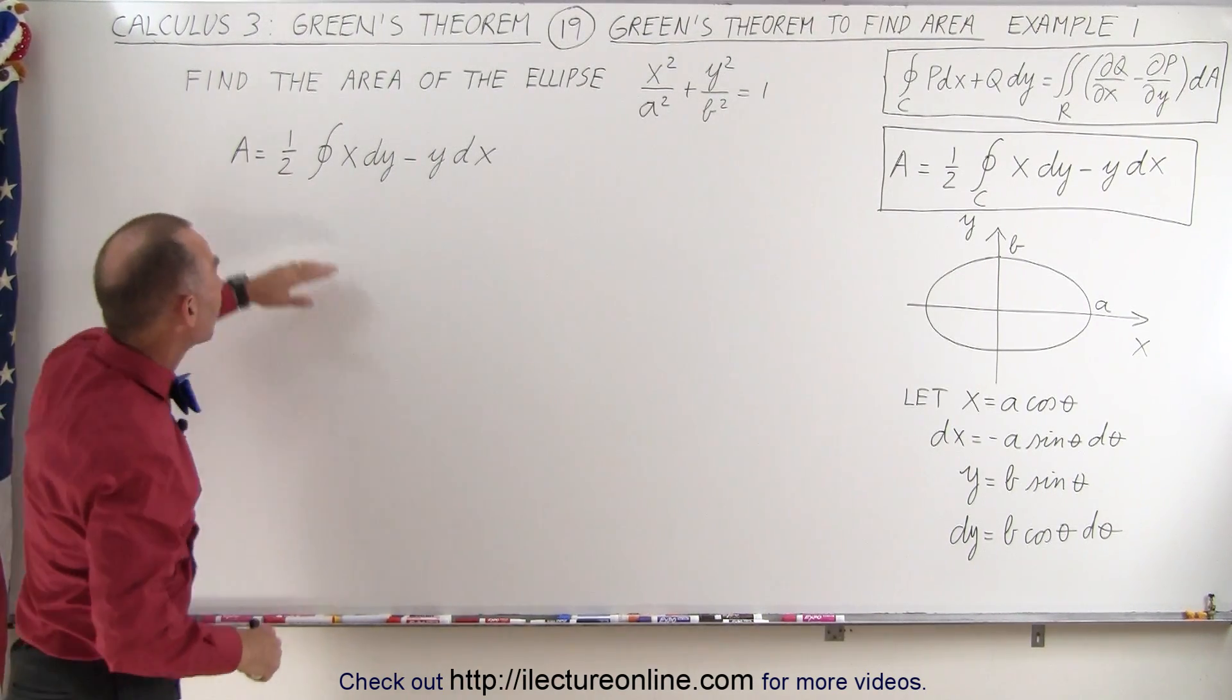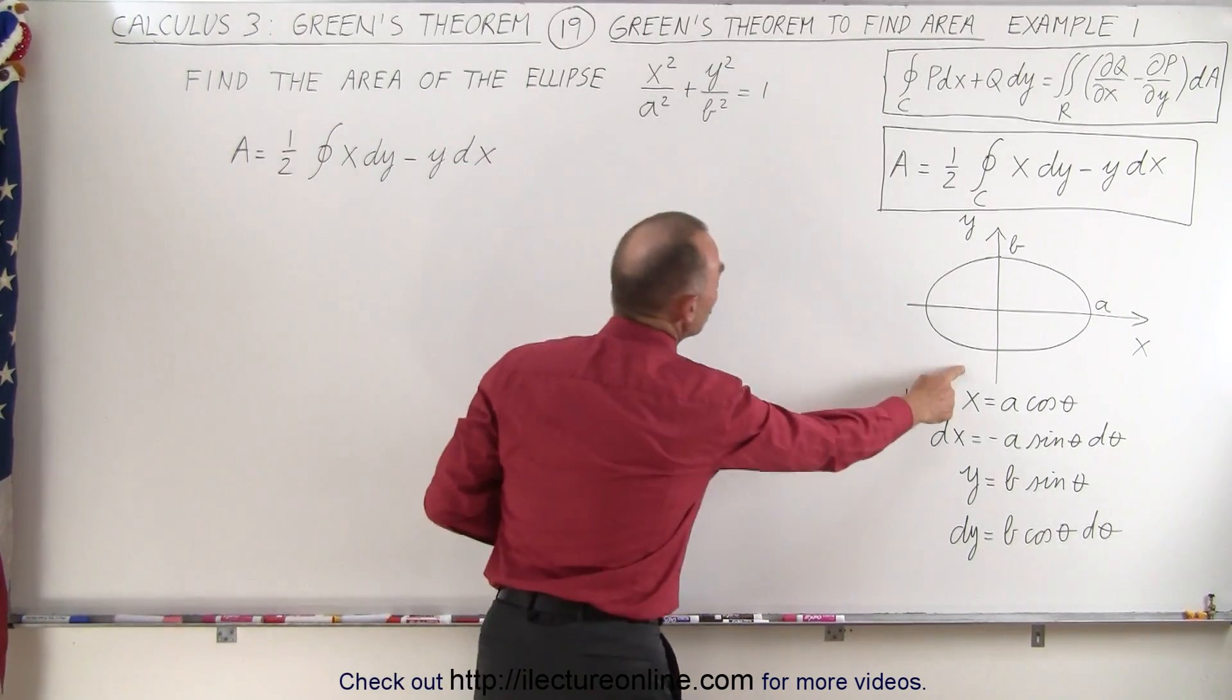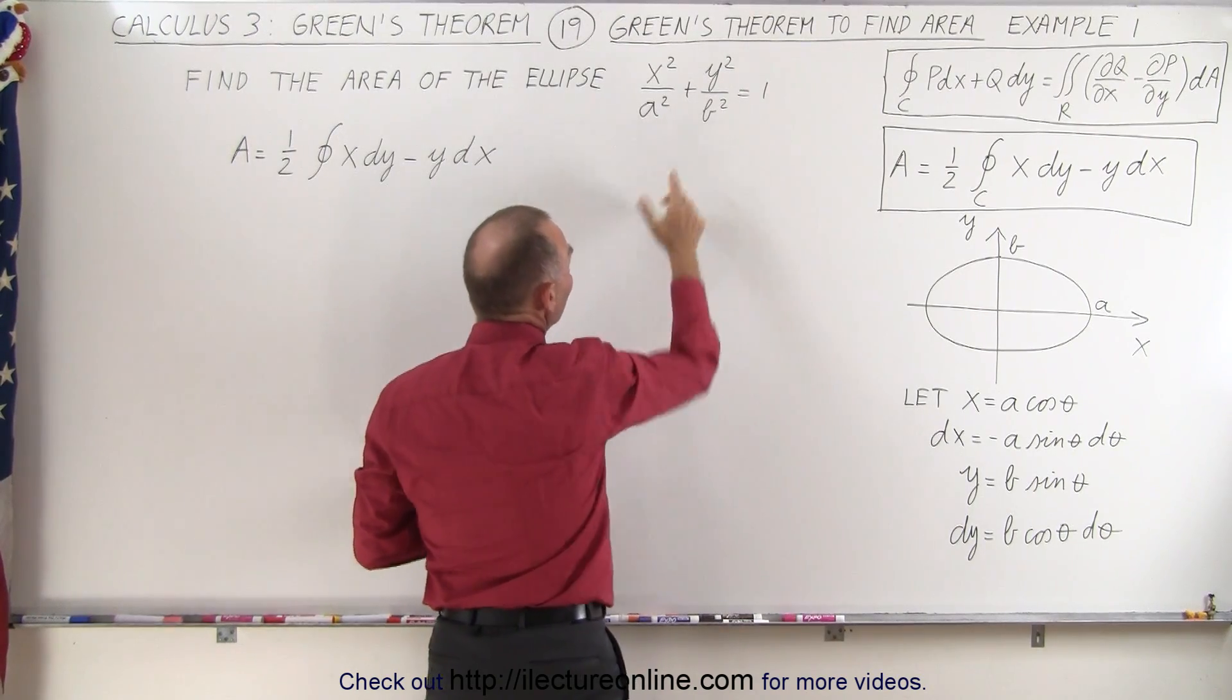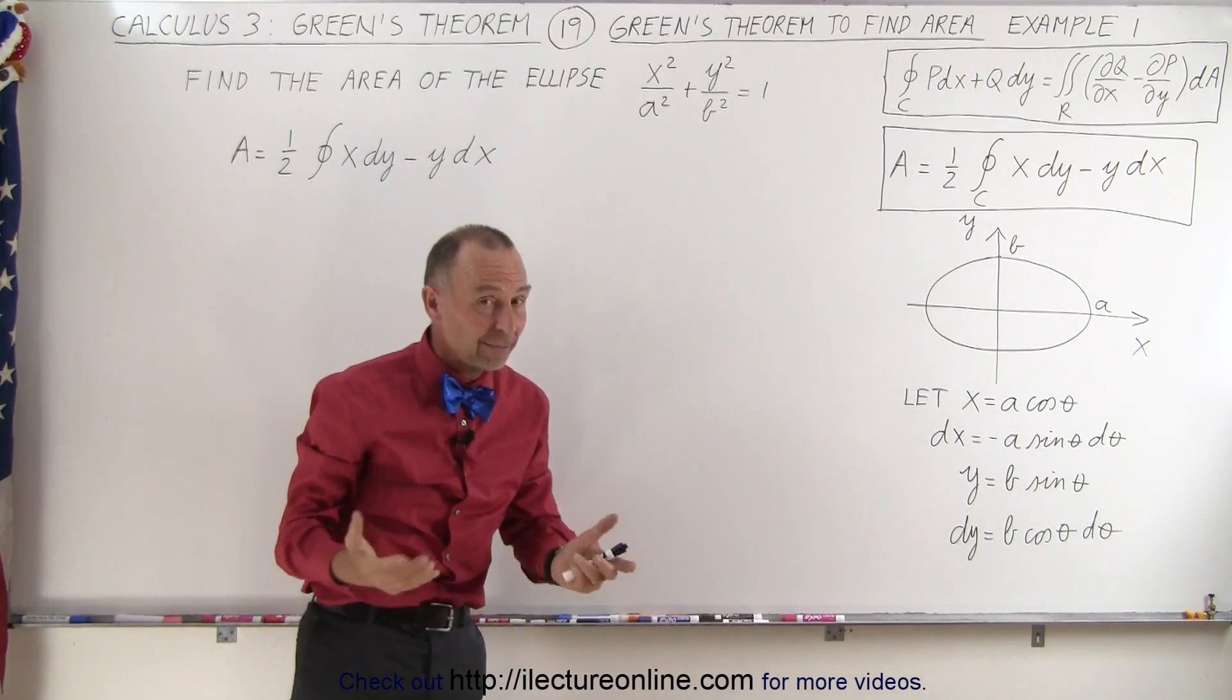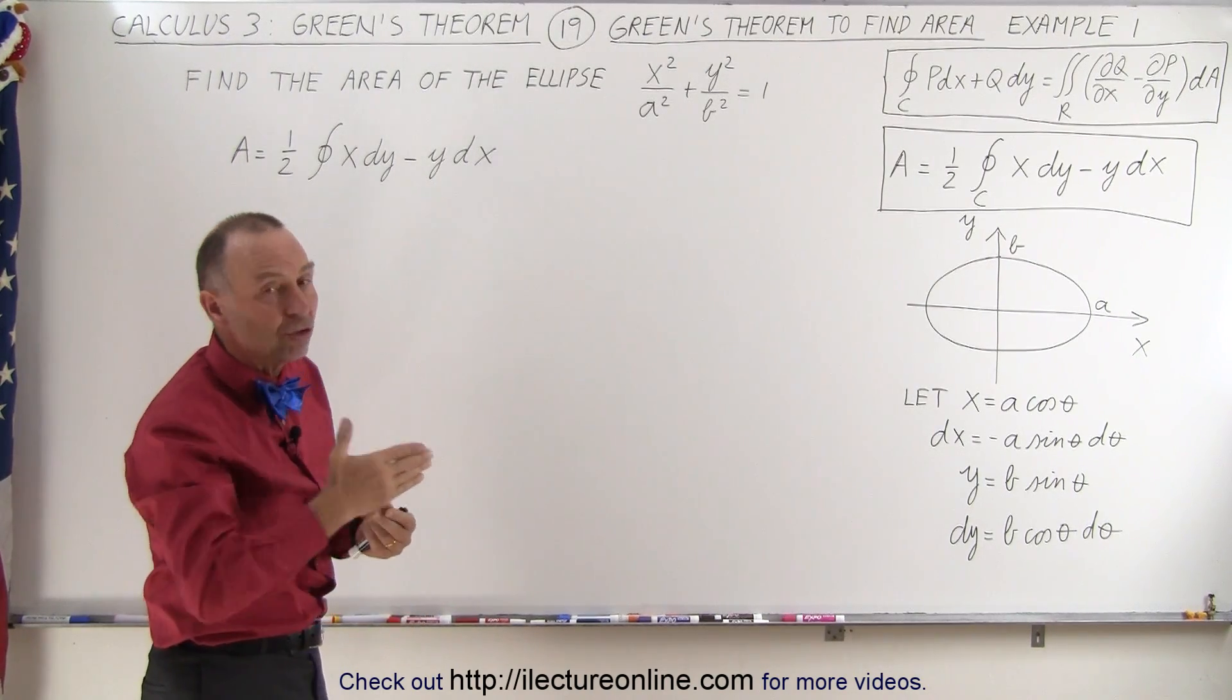So here is the equation that we derived on the previous video. Here's the ellipse. Here's the equation of the ellipse defined by a and b. a and b probably are different numbers. If they're the same, then you have a circle.